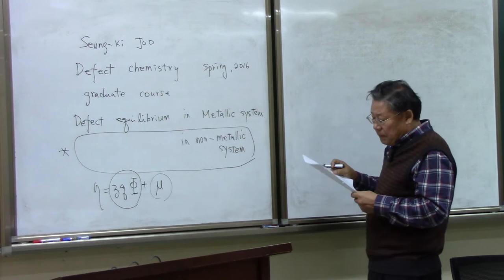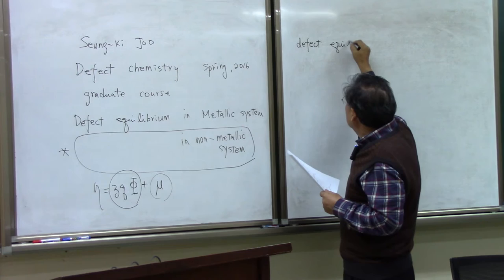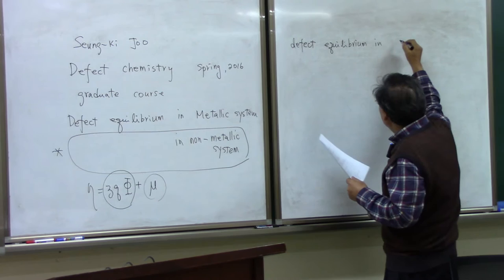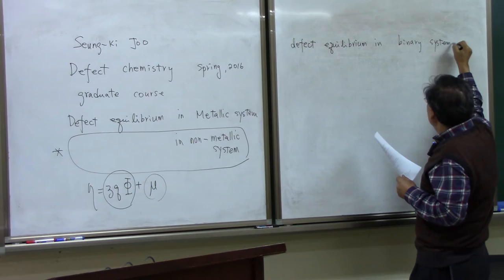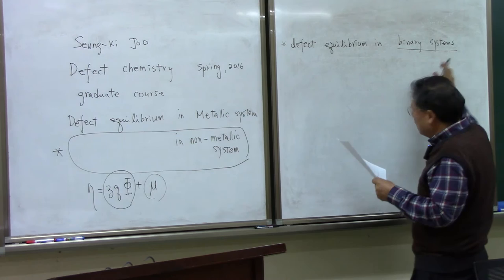We are going to move to the defect equilibrium in binary systems. We can extend this idea to ternary systems, quaternary systems, but in the class we just discuss about the binary systems only.